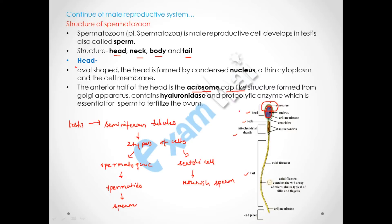The acrosome is a cap-like structure that contains the enzyme hyaluronidase, which is a proteolytic enzyme essential for the sperm to fertilize the ovum. The ovum contains hyaluronidase in high concentration, so this enzyme digests the outer layer and allows entry of the sperm into the ovum, enabling fusion of the nuclei for the formation of a zygote.